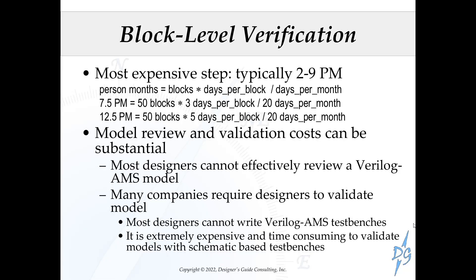To show you how we get the estimate of 2 to 9 person months: person months equals the number of blocks times the days per block, divided by the days per month. Say you have 50 blocks and it takes 3 days per block—that's about 7.5 person months. With 50 blocks and 5 days per block, that's 12.5 person months. I typically estimate about 4 days per block: one day to write the model, one day to write the test bench, one day to run the test bench against the schematic, and one day throughout the project to update the model and rerun the test bench as schematics are updated.